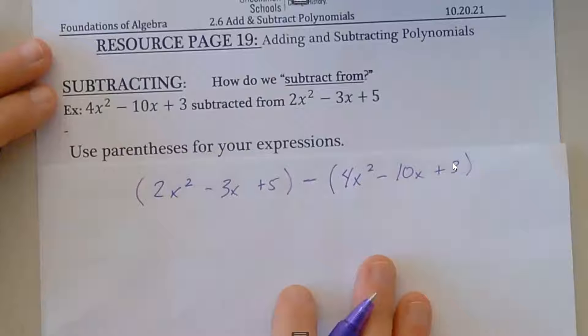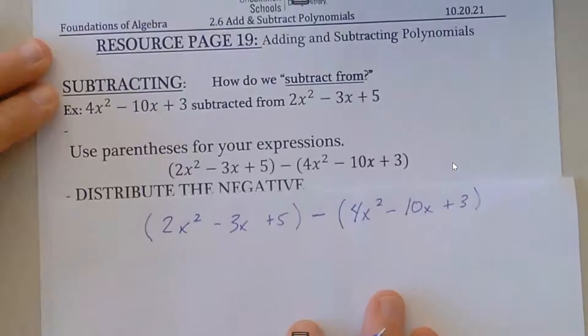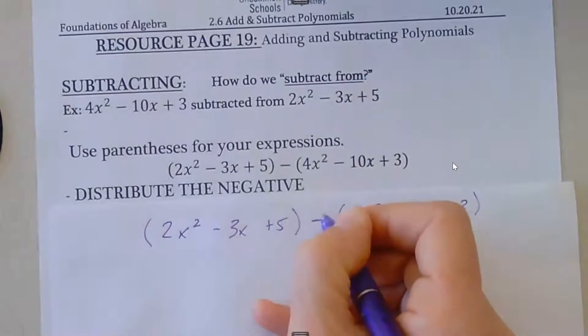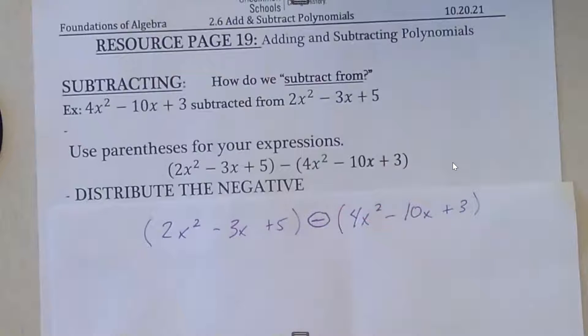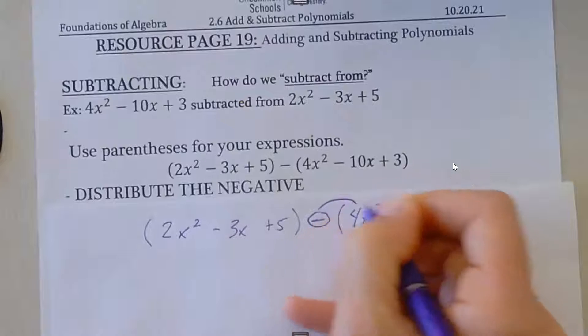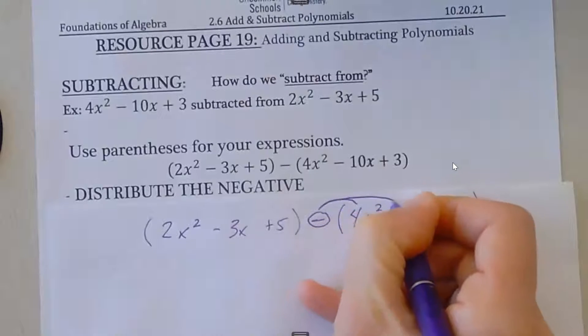The next thing we need to do is distribute this minus sign. So that means that the minus sign is going to distribute to all of the signs in the second set of parentheses.